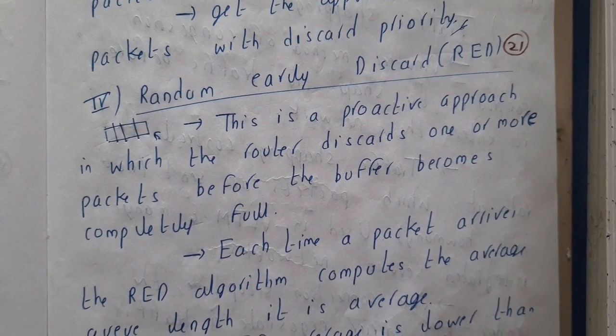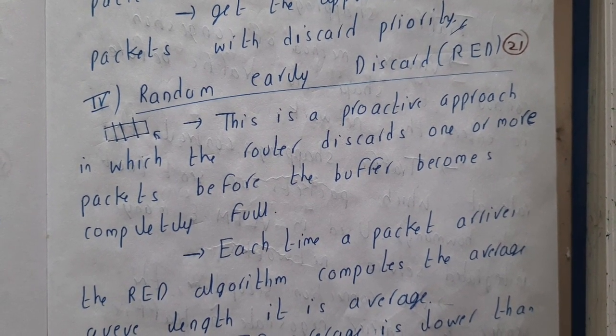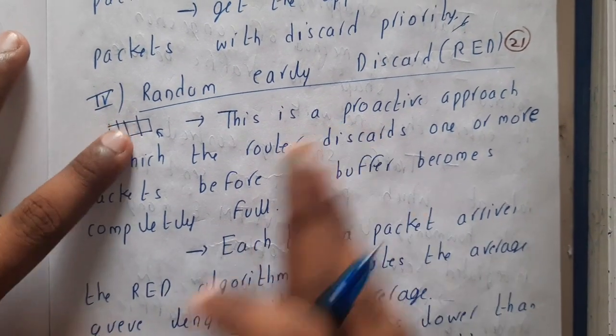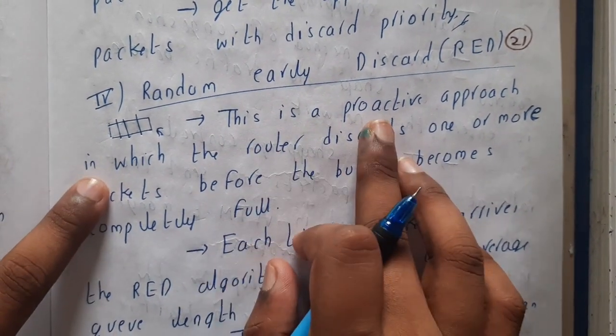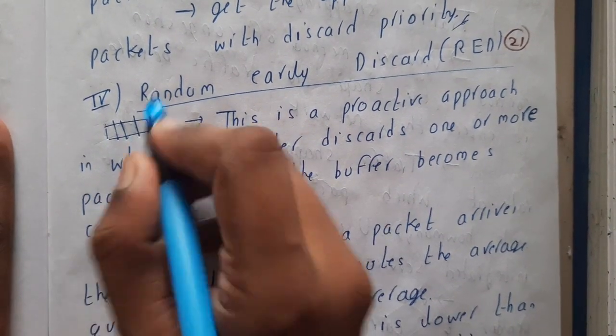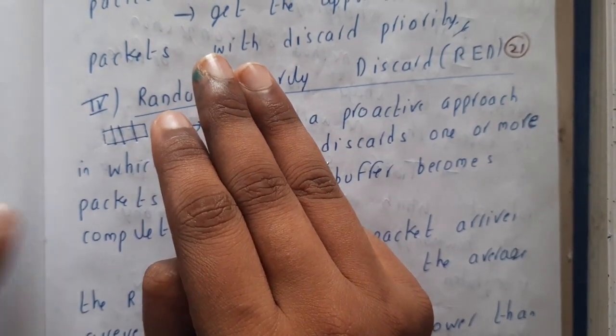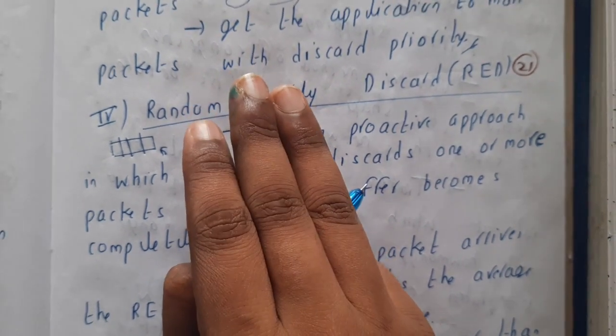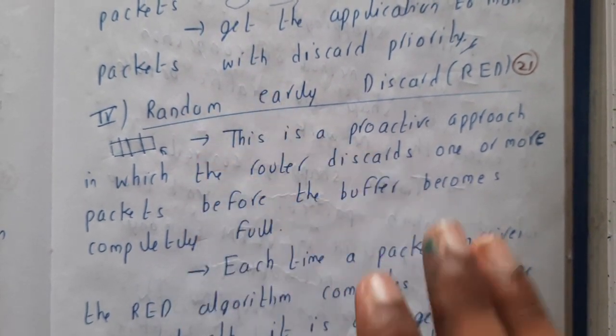This is also a continuation of the previous topic. This is a proactive approach. The first three techniques are congestion detection, and the last two are congestion prevention. This comes under congestion prevention because it uses a small tactic to handle this.